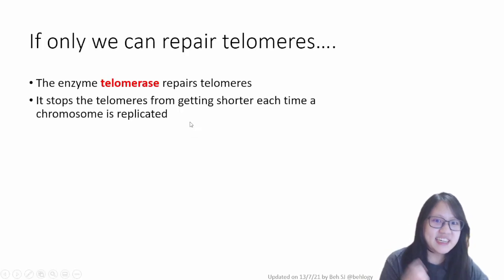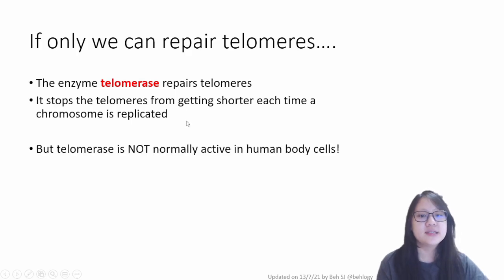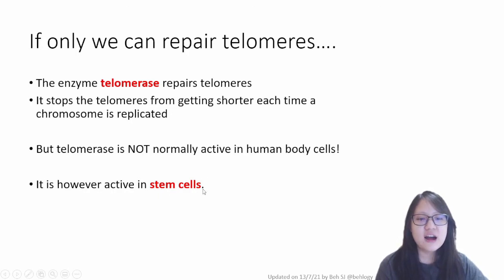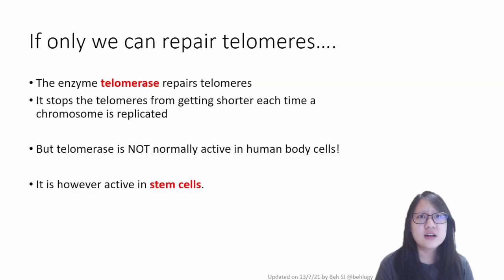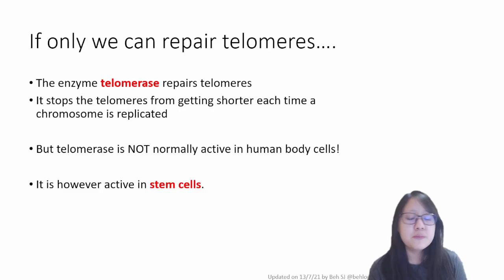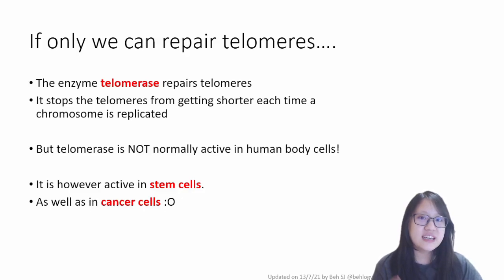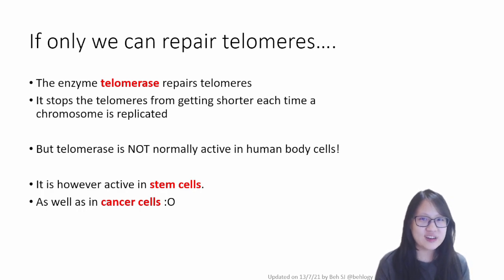However, even though our DNA has the code for telomerase, telomerase is not normally active — it is not normally expressed in human body cells. It is only expressed in stem cells, which we'll be talking about next video. Stem cells are amazing cells which help us heal wounds, and they are the cells that can divide limitlessly. However, telomerase is also active in cancer cells. Can you imagine cancer cells dividing limitlessly? What havoc can that cause? We'll learn about cancer as well in our next video.